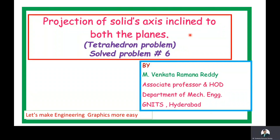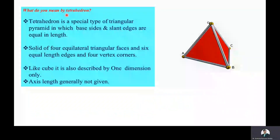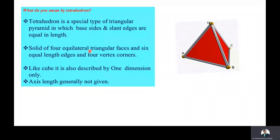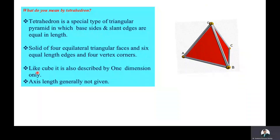Now we will see what a tetrahedron is. A tetrahedron is a special type of triangular pyramid in which the base sides and slant edges are equal in length. It is a solid of four equilateral triangular faces, six equal-length edges, and four vertex corners. Like a cube, it is also described by one dimension only — the length of the side.